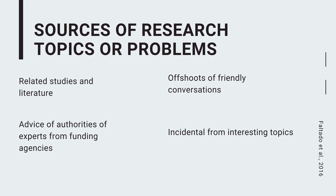From there, narrow down to the specific topic you want to explore most. Another source can be the advice of authorities or experts, especially if your study has funding from funding agencies. Of course, if there is no funding source to continue your research, then seek the advice of experts. Another source is an offshoot of friendly conversations. We are very comfortable when conversing with friends — our ideas and rants come out, and from those rants we can come up with a research problem.